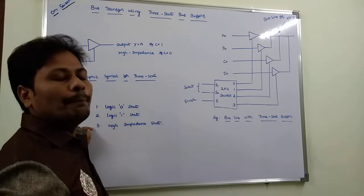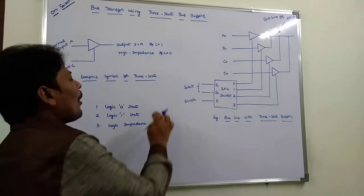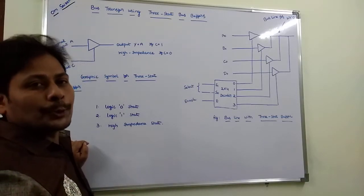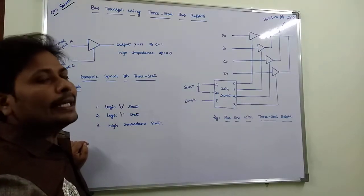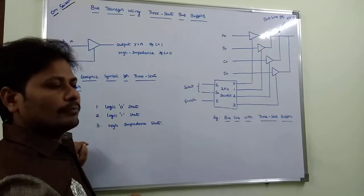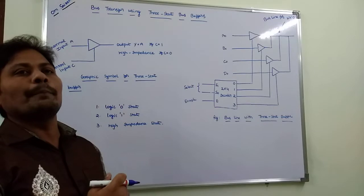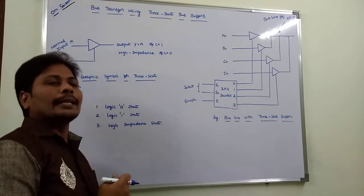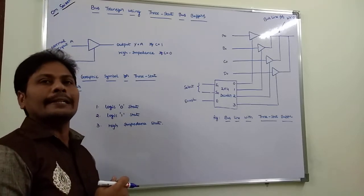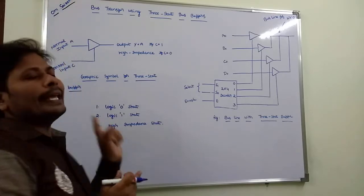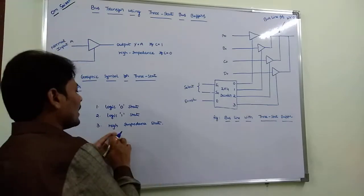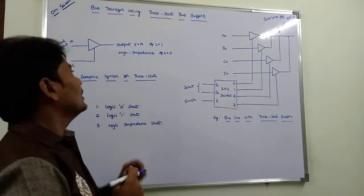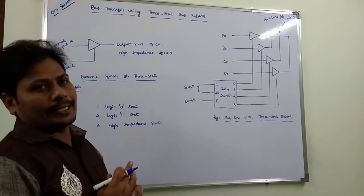Among these three states, two states are logically equivalent to logic zero and logic one in conventional logic. The third state is high impedance state. High impedance state behaves like an open circuit, meaning the output is disconnected from the input and does not have any logical significance. Those are the three states exhibited by the three-state gate.